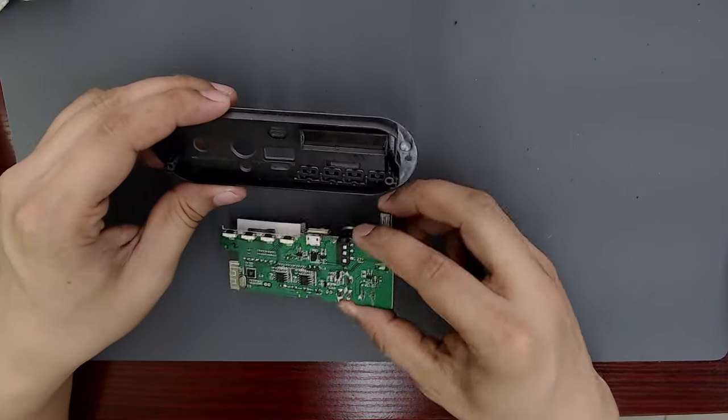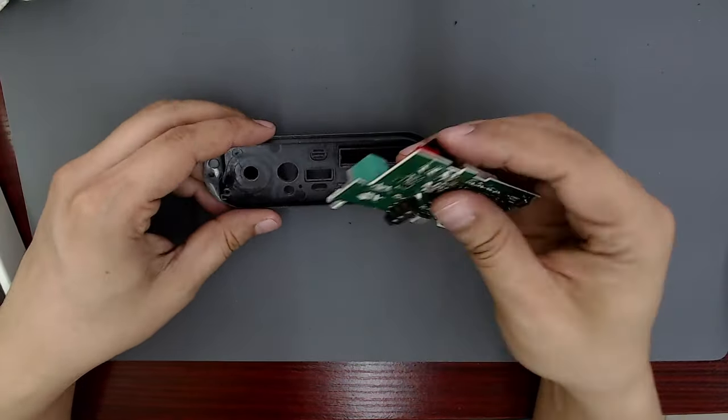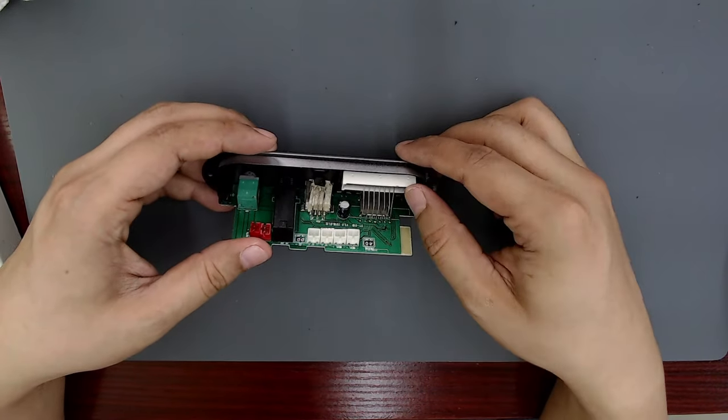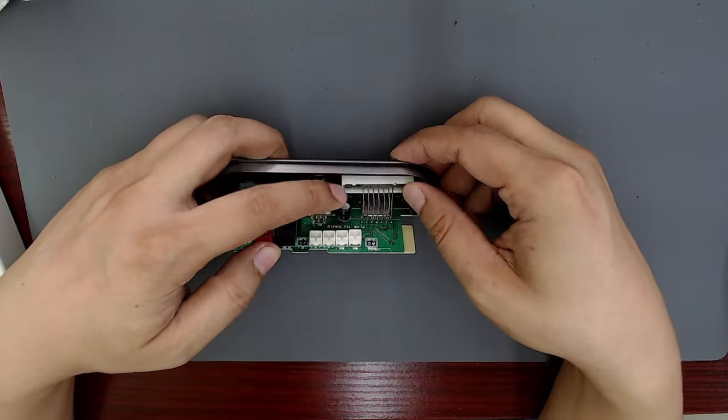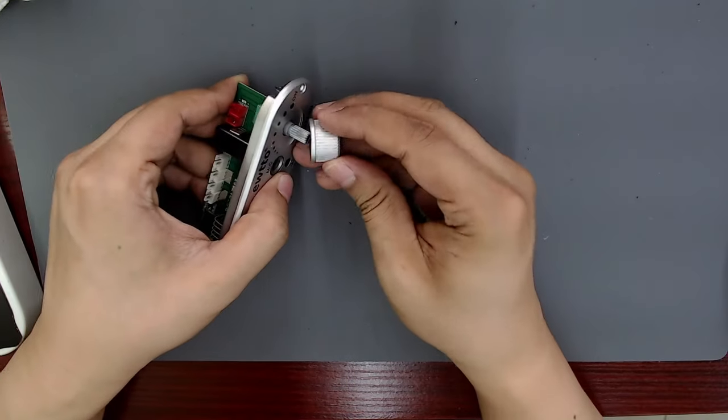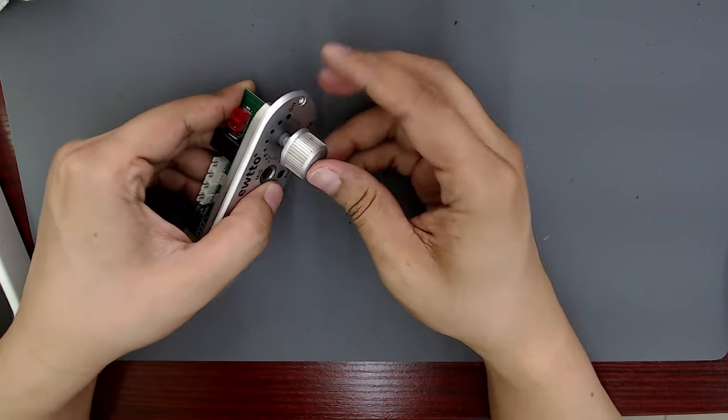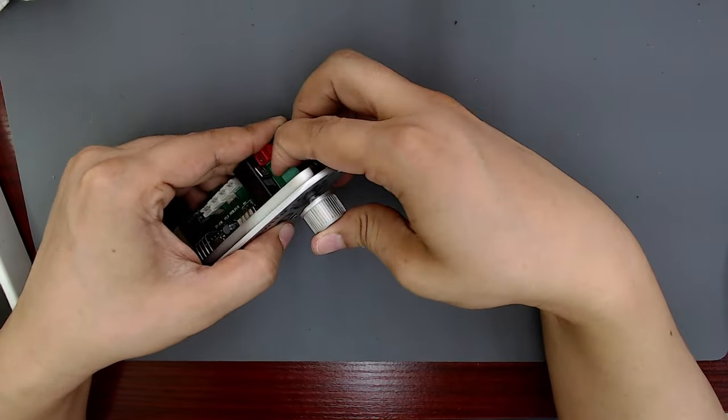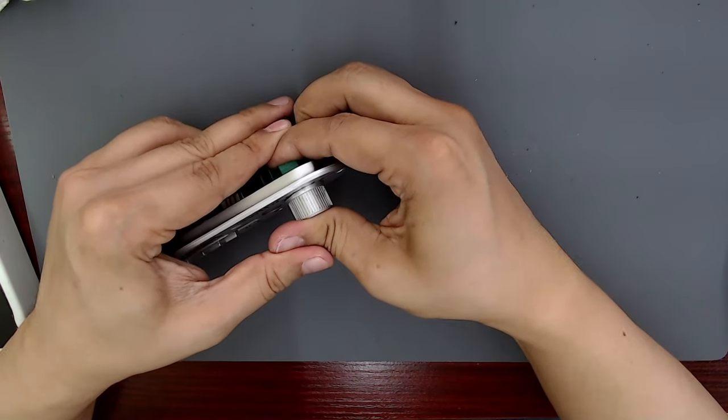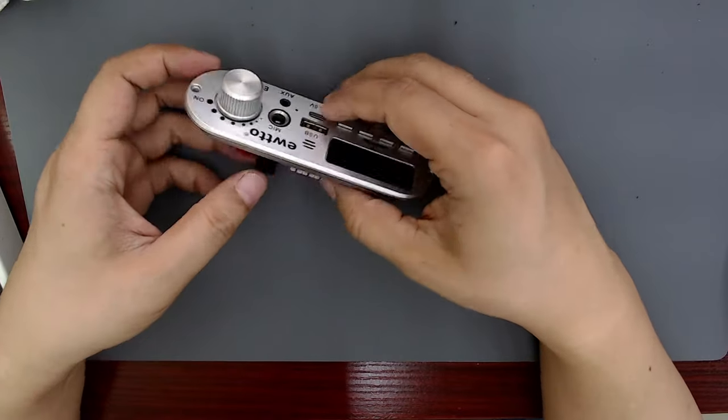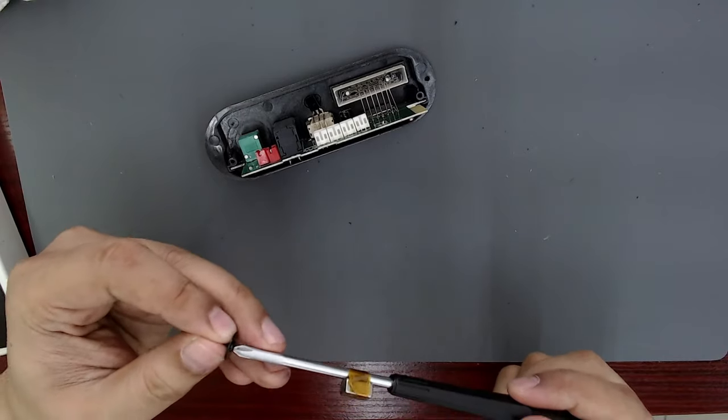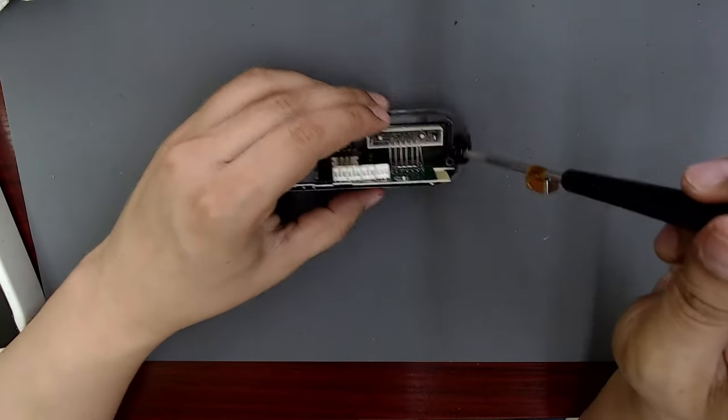Now I can reassemble everything. With the board fixed, I insert the board into the plastic of the front panel. It's time to put the potentiometer knob on. There are two screws that I have to tighten to hold the board in place.